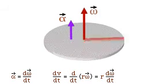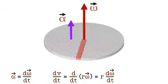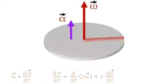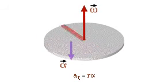The tangential component of the object's linear acceleration vector is tangent to the object's path. Its magnitude is r times the magnitude of the angular acceleration.